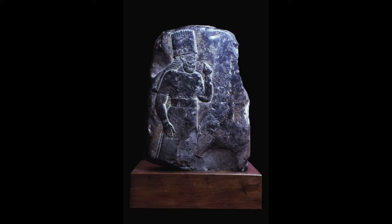This is a kuduru, the Akkadian term for a boundary stone. Akkadian was the language of the first empire of the ancient civilization of Mesopotamia, present-day Iraq. A boundary stone like this one would sit at the end of a person's property, kind of like a fence at the end of a yard. That's how people would know where their land ended and the next person's began.